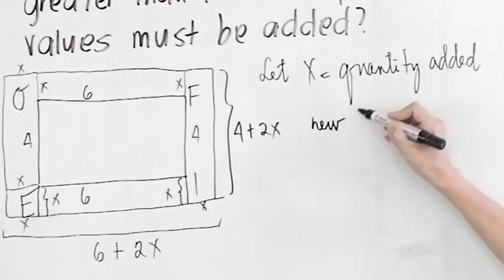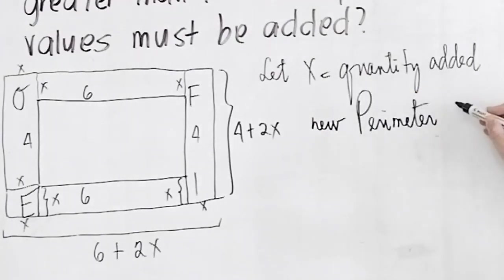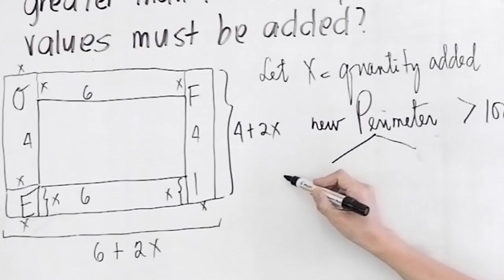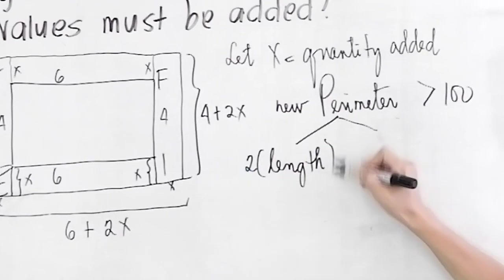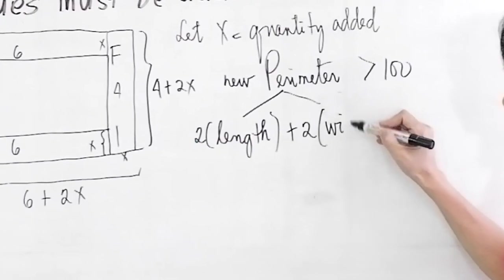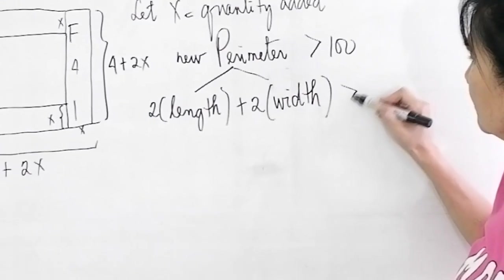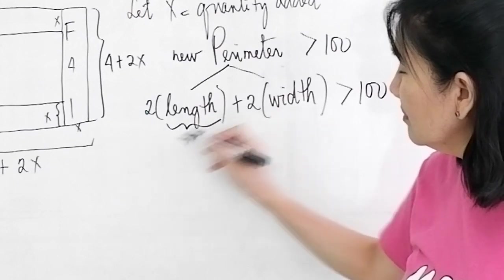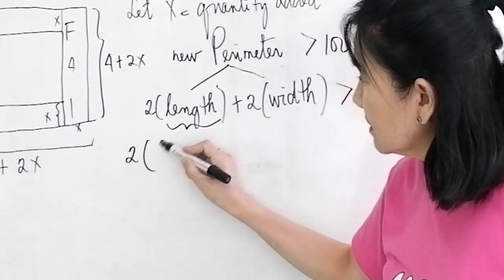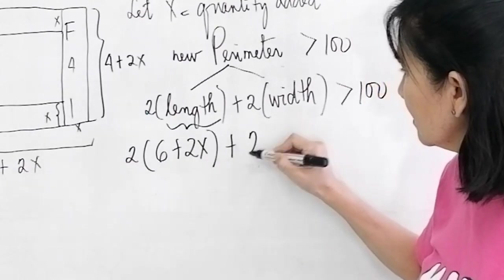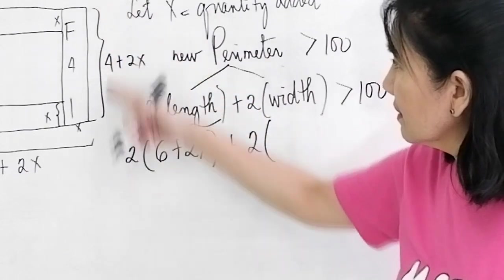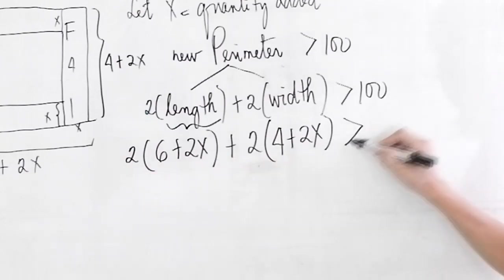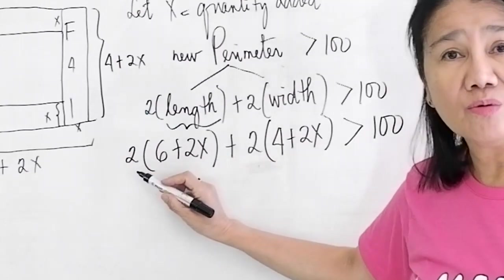The perimeter becomes greater than 100, so the new perimeter is greater than 100. How do we get the perimeter? The perimeter is always 2 times the length plus 2 times the width. Remember, perimeter is just a measurement around, must be greater than 100. The new length is now 6 plus 2x plus the new width is 4 plus 2x, and this perimeter will give us greater than 100.